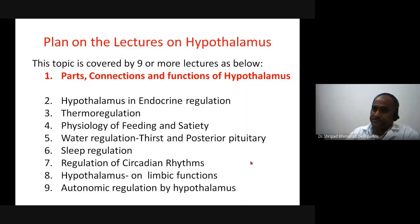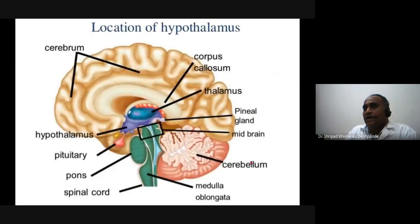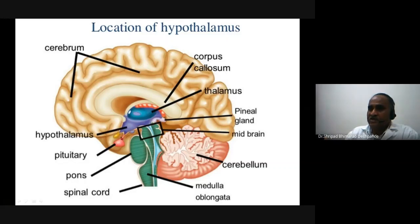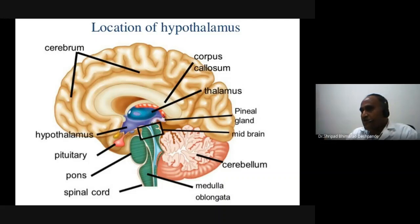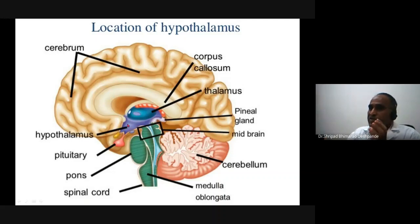Let us consider where the hypothalamus is. Here is the brainstem; this is the midbrain. Above the midbrain, this blue area is the hypothalamus, situated above the pituitary gland. You can see the optic chiasma coming up here, the corpus callosum, and the cortical area — the cerebral cortex and cerebellum — showing the relation of the hypothalamus.